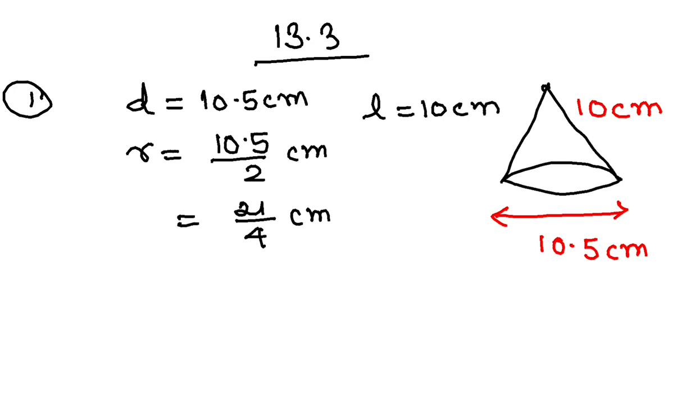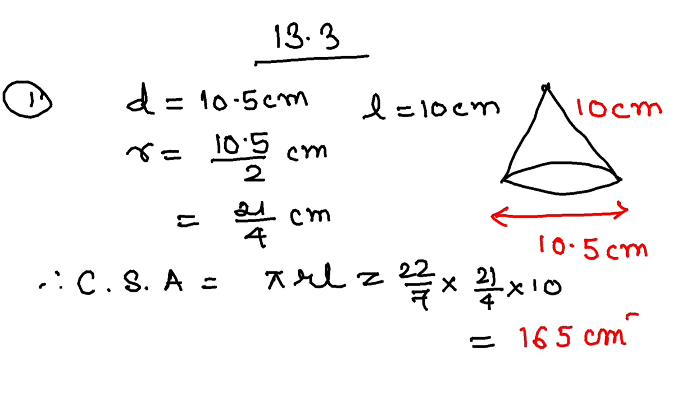I have to find CSA of the cone. The formula for CSA of a cone is πrL. So all you need to do is put the values and calculate: 22 by 7, 21 by 4, into 10. If you calculate this you will get the final answer as 165 centimeter square.